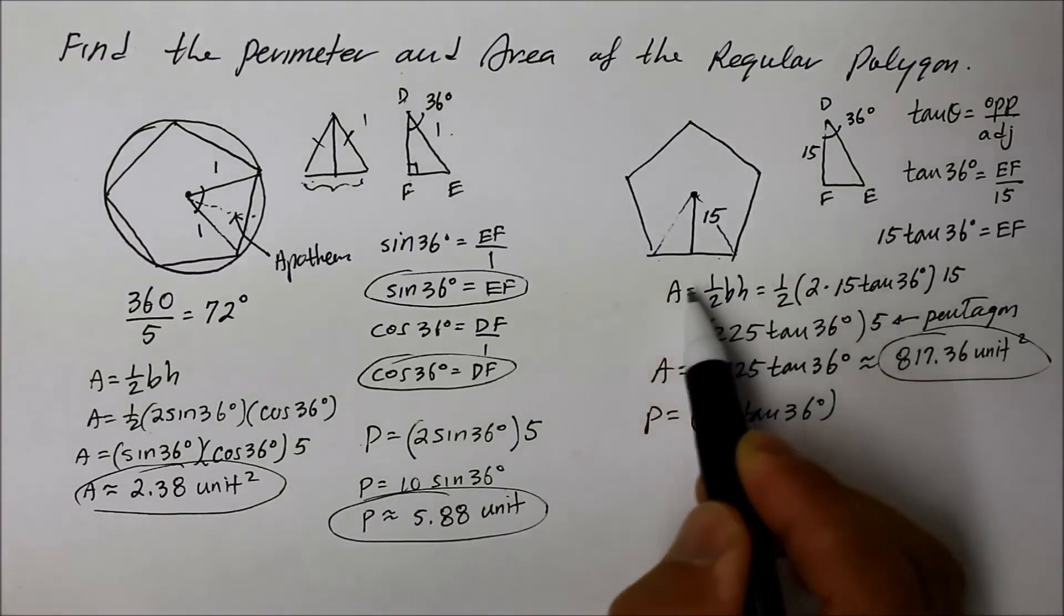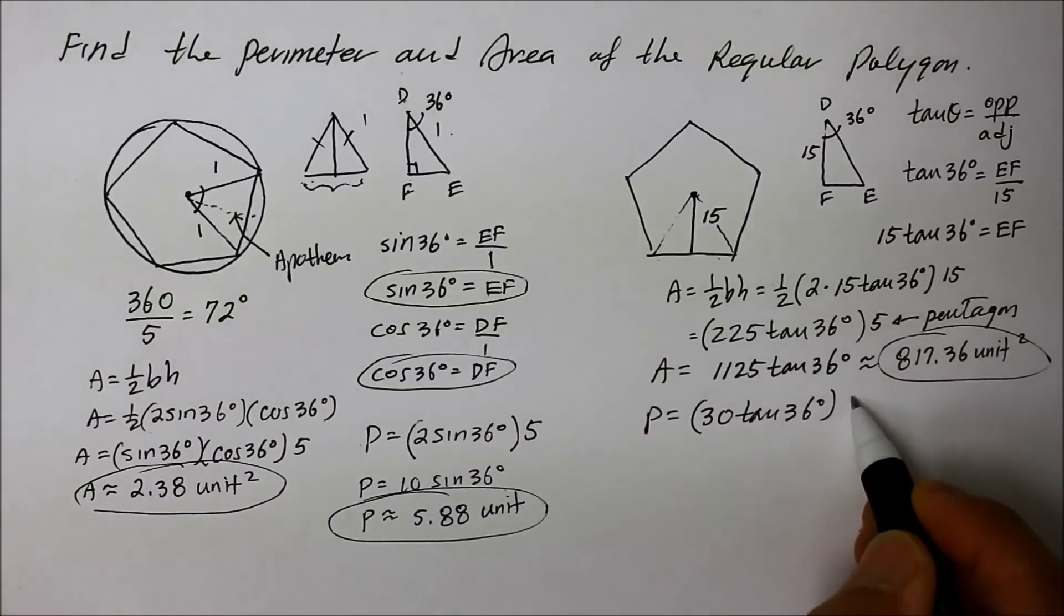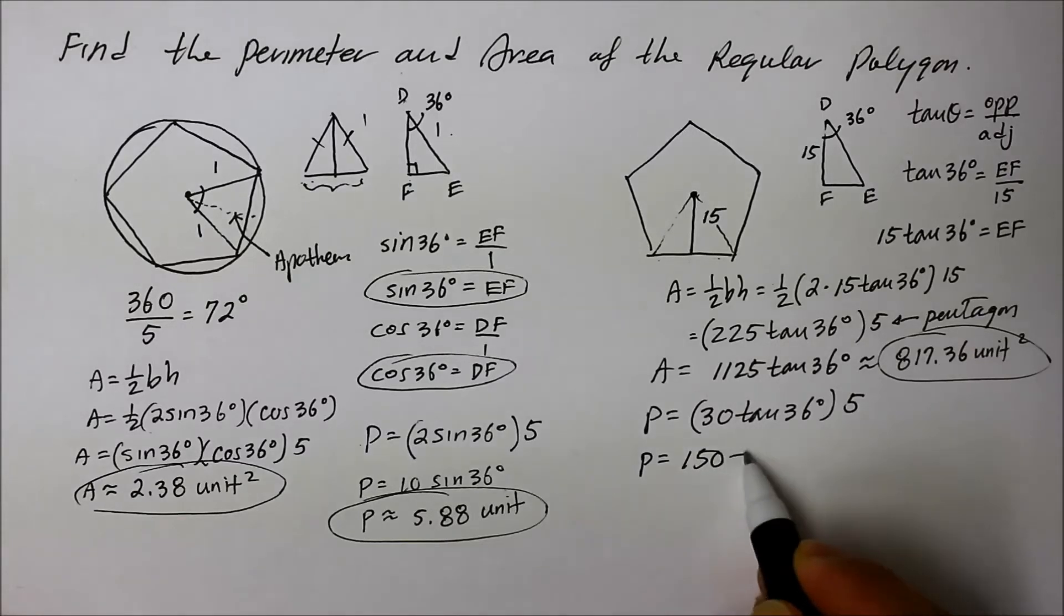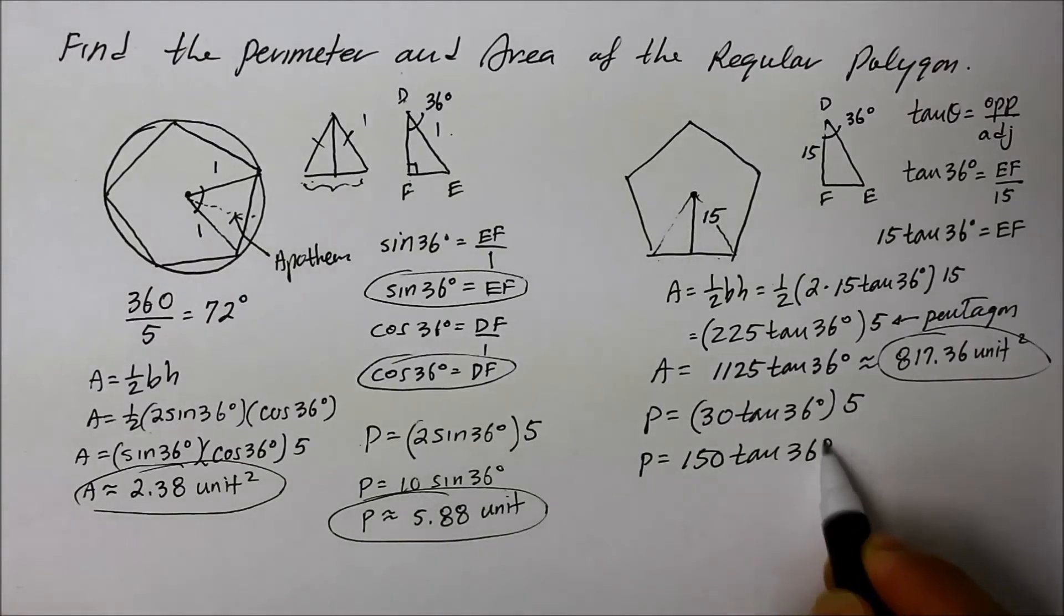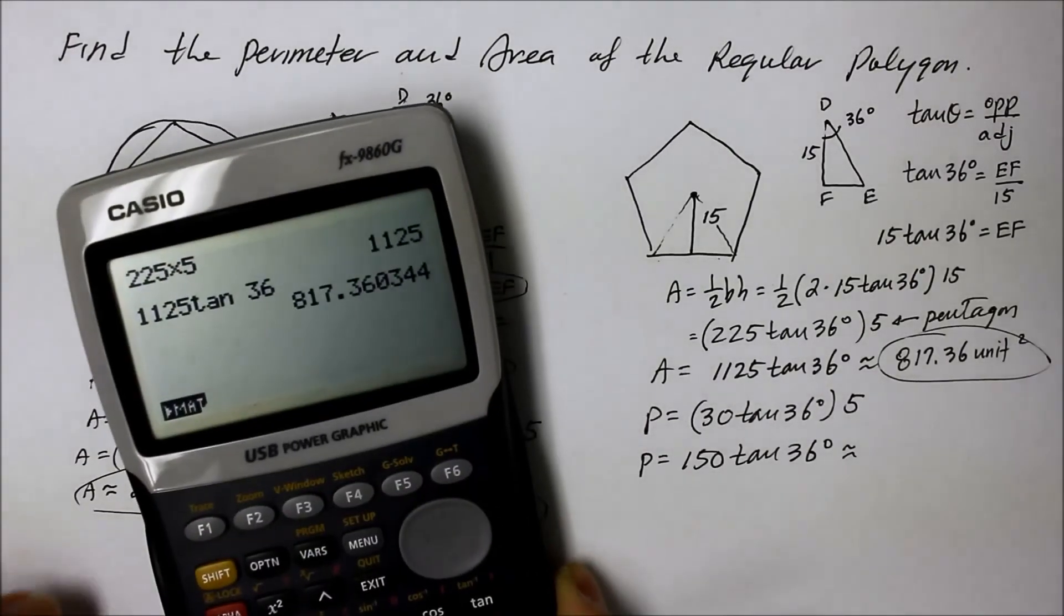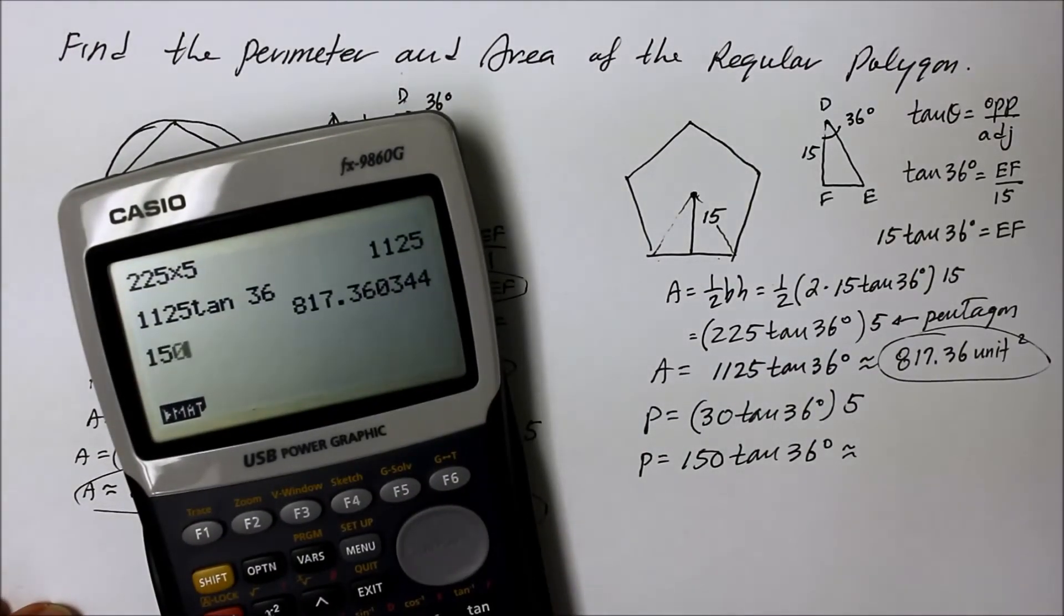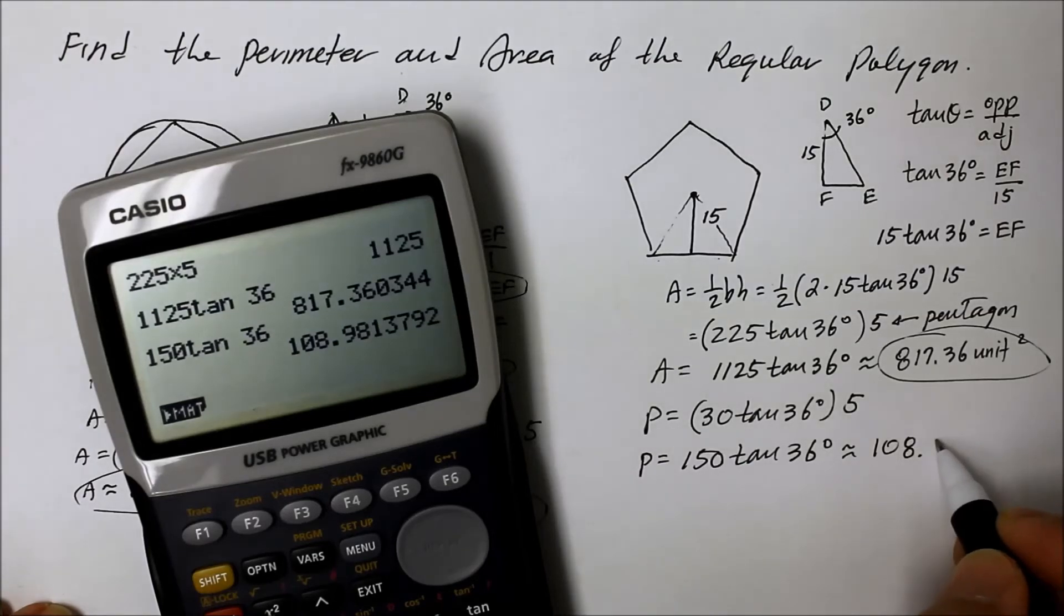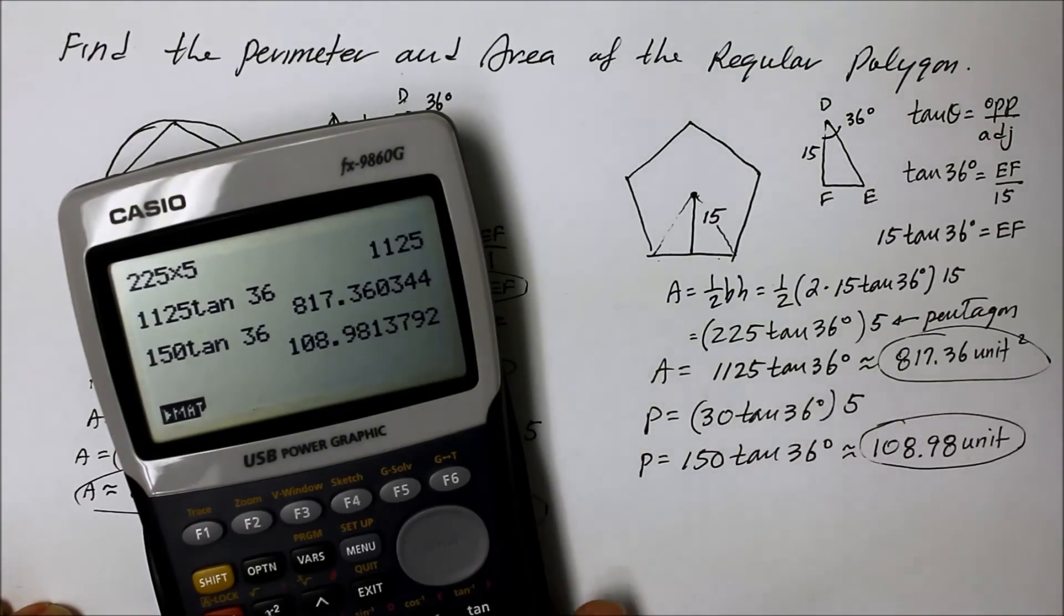So we have to multiply the whole thing by 5. So the perimeter actually equals 5 times 30, which is 150 tan 36 degrees. And if you want to get a numerical value of that, you go 150 times tan 36 degrees, you get a value of 108.98 approximately units long around the whole perimeter of the pentagon.